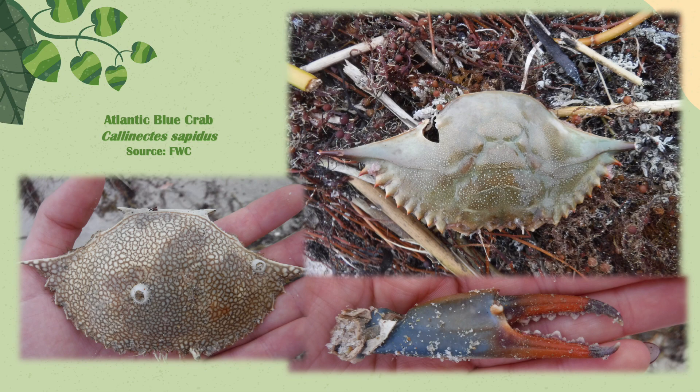These are photos of parts of an Atlantic blue crab, Callinectes sapidus. You can see two different shells I found and also a claw. The shell on the left has a barnacle on it and a pretty cool pattern. The Latin name Callinectes sapidus actually translates to 'beautiful swimmer' and 'tasty' in Latin.